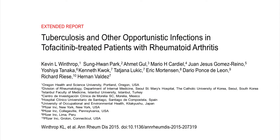Tofacitinib is an oral Janus kinase inhibitor used for the treatment of rheumatoid arthritis. To evaluate the risk of TB and opportunistic infections, we undertook a retrospective evaluation of all cases of TB and opportunistic infections reported within the Tofacitinib Clinical Development Program for RA.